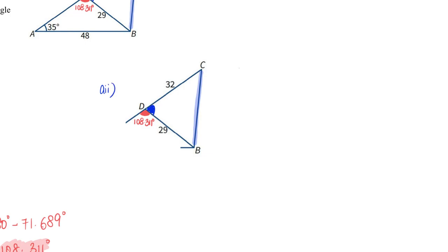For part two, step one would be for us to take note of what is my angle BDC. This one is adjacent angles on a straight line, and this one will give me 71.689 degrees.